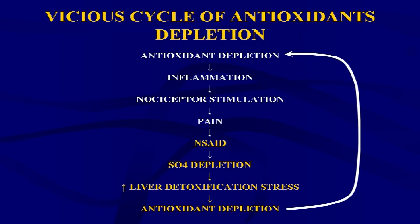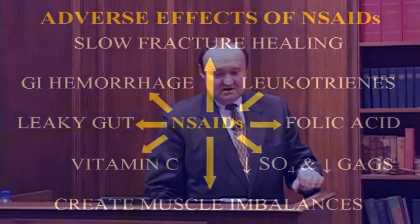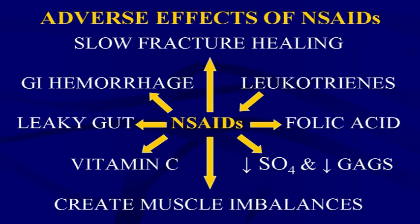NSAIDs further deplete sulfate, causing increased liver detoxification stress. Stress on the liver causes more antioxidant depletion, which causes more inflammation, more nociceptor stimulation, more pain — a vicious cycle of antioxidant depletion. This doesn't happen in every patient every time, but stepping back and looking at long-term care, these are the pieces of the puzzle. Some patients have all of them, some have a few, but these are the vicious cycles they get trapped in and someone must intervene.